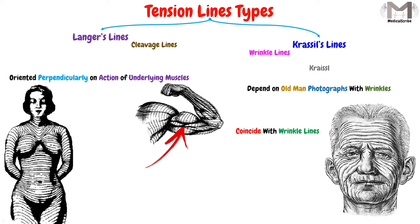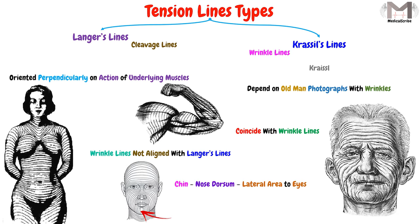Also, we have to know that the wrinkle lines do not always align with the Langer's lines, particularly on the chin, on the dorsum of the nose, and on the area lateral to the eyes. So, these are the wrinkle lines, which is the second type.